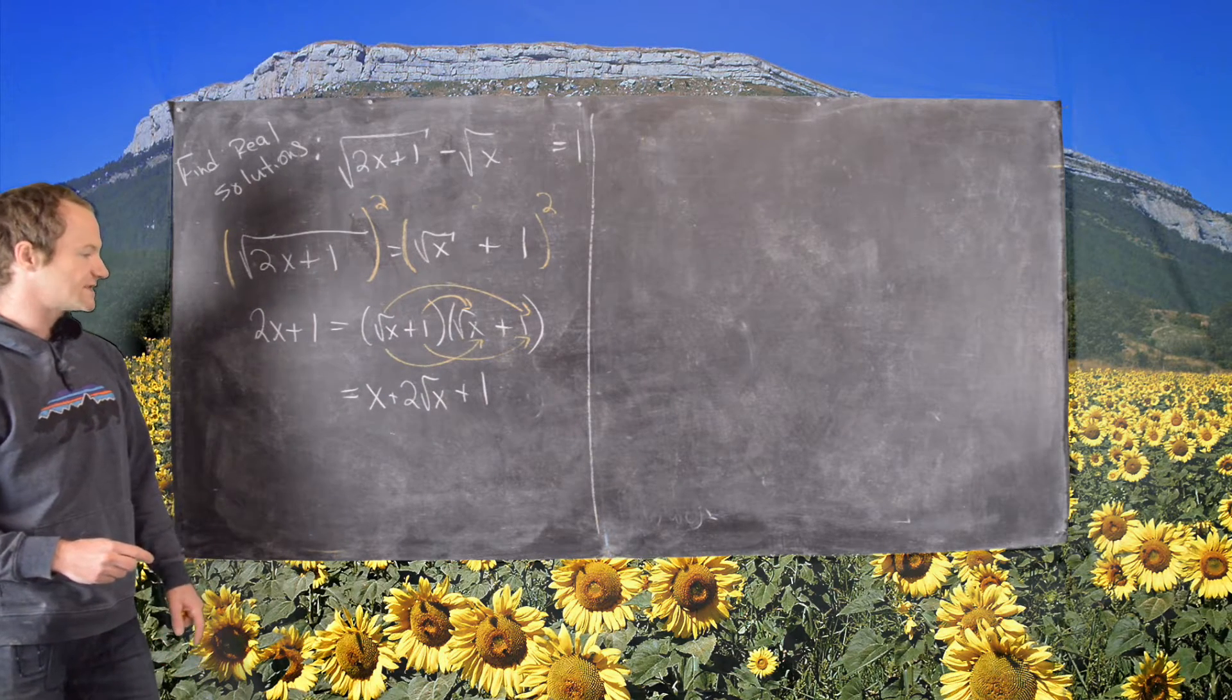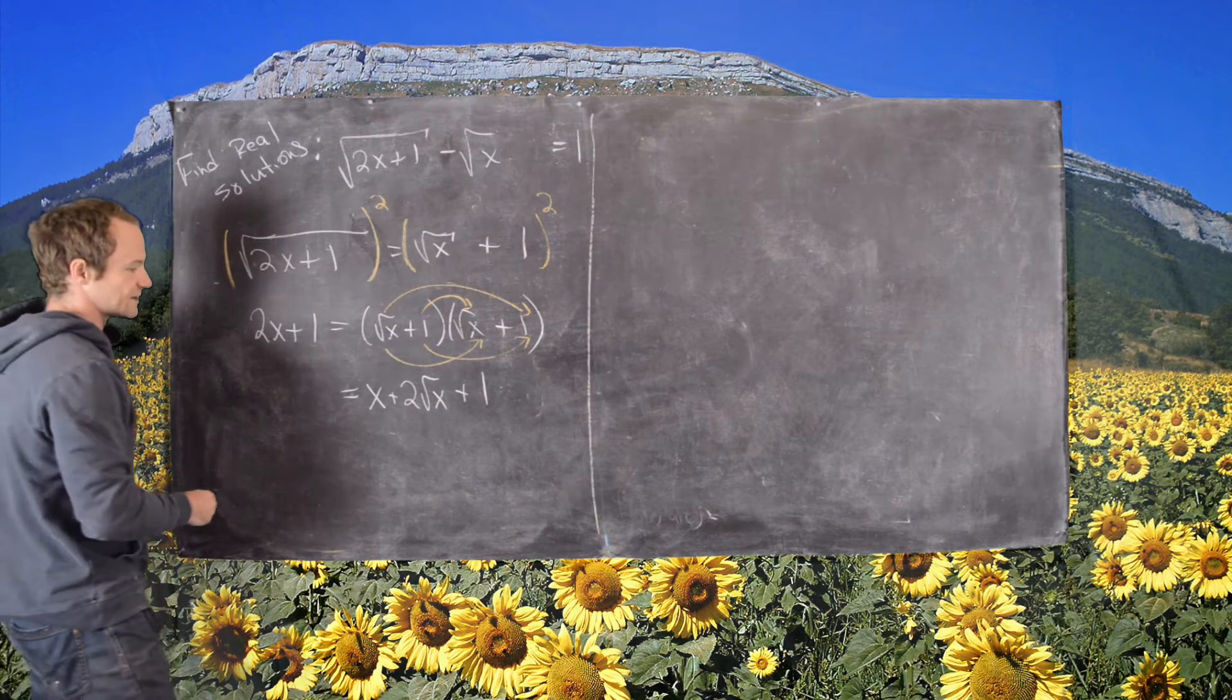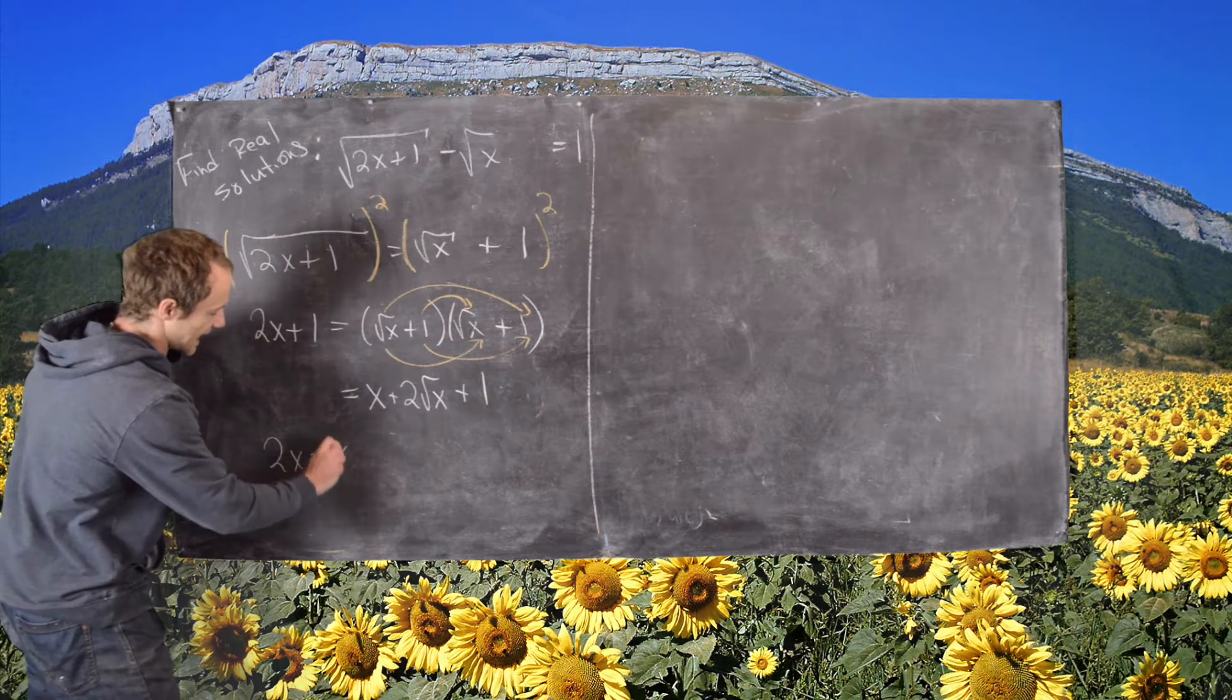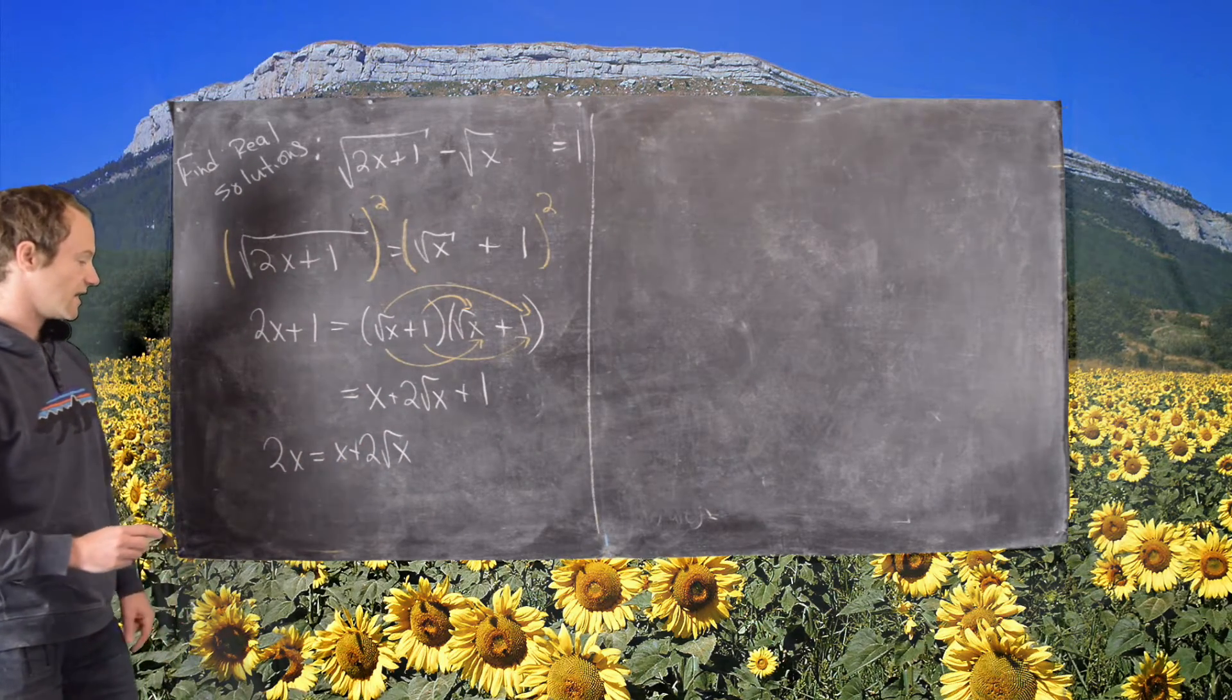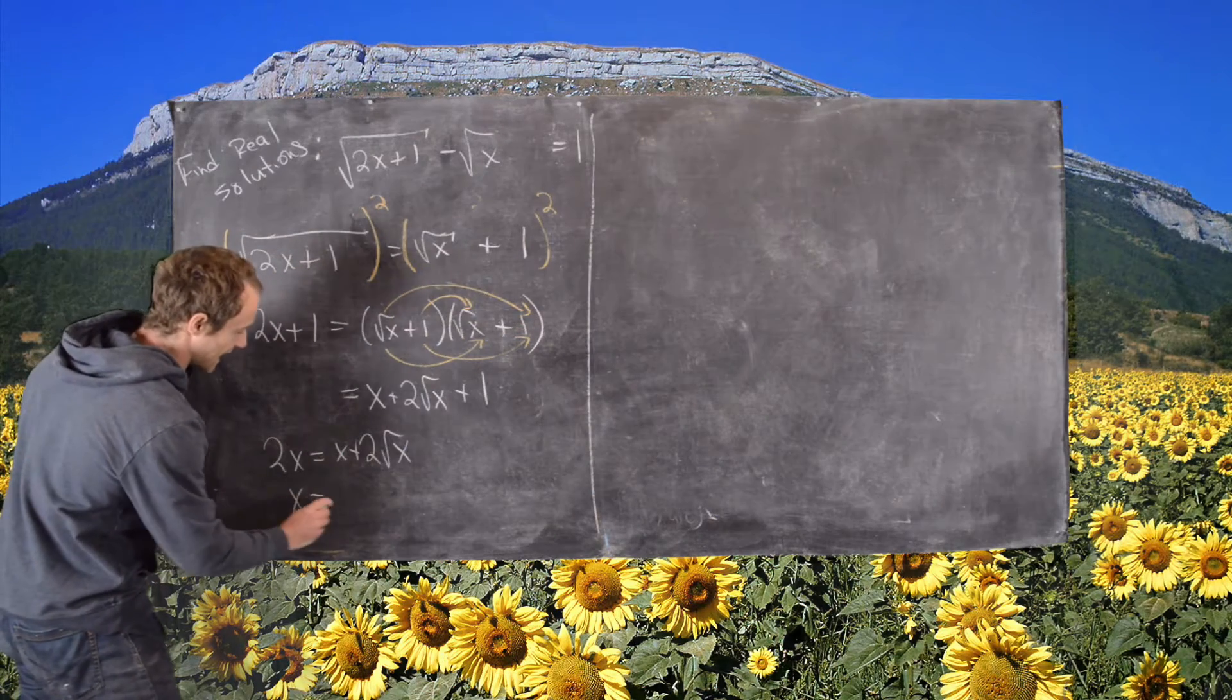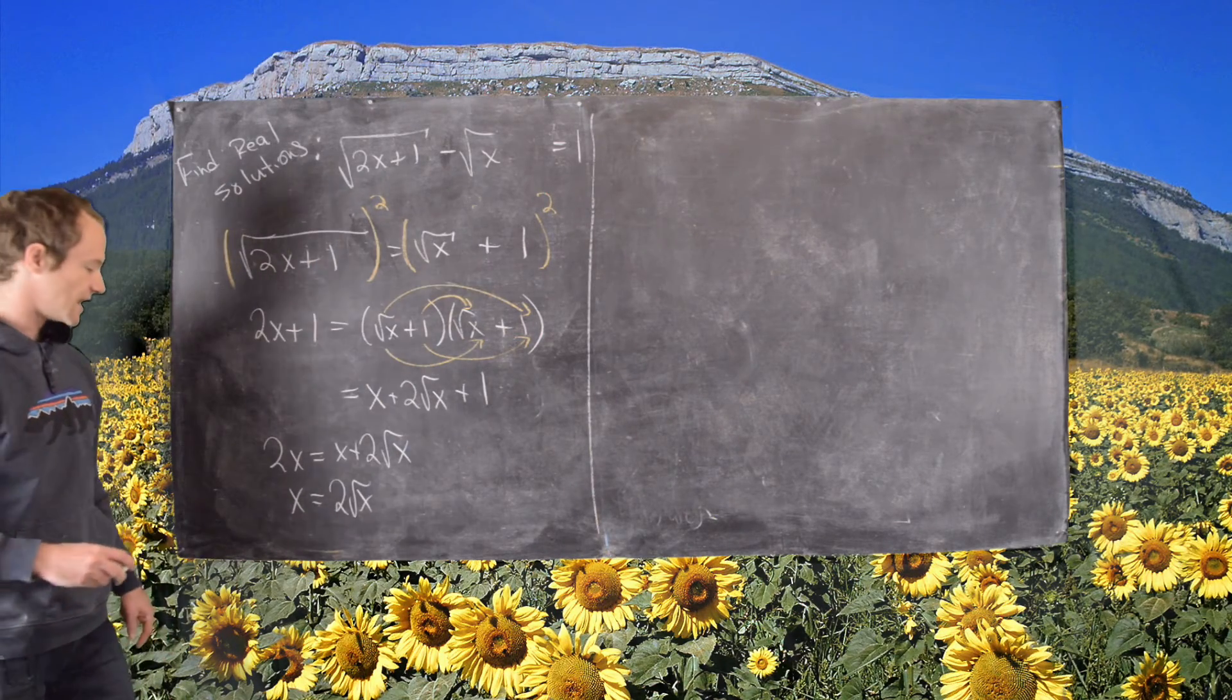Now we can work on simplifying that. We'll subtract 1 from both sides, and notice that will cancel. That's going to leave us with the equation 2x equals x plus 2 times the square root of x. Now I'm going to move this x up to the other side.